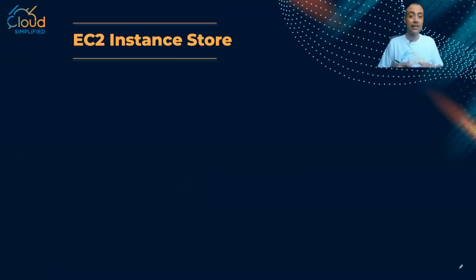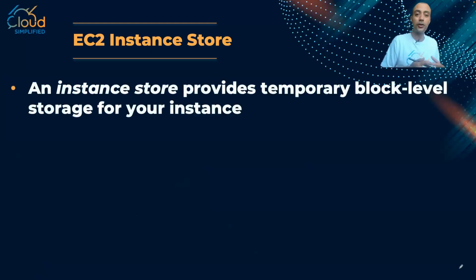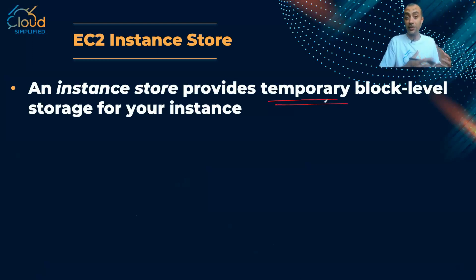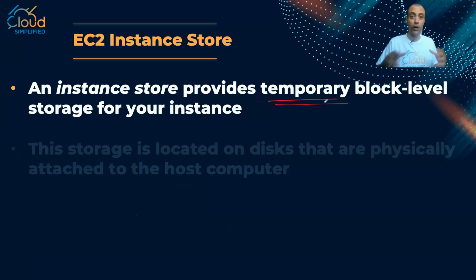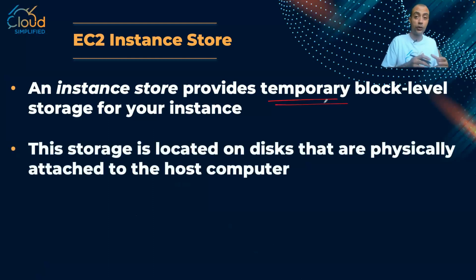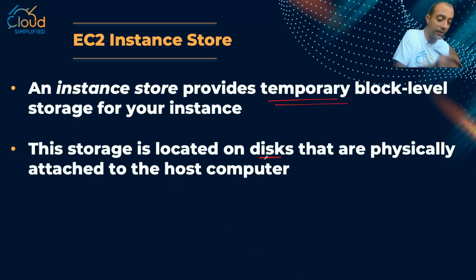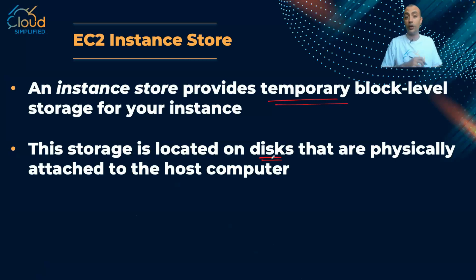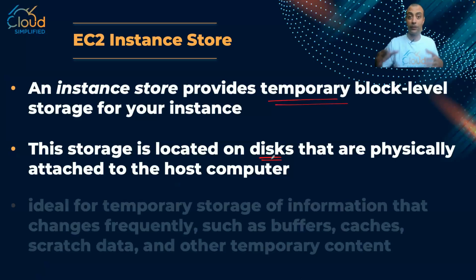Now let's look at the characteristics of the EC2 Instance Store. First, Instance Store provides temporary block-level storage for your instance. As mentioned, if you stop or terminate the instance, your data is lost. Instance Store is the fastest type of storage because it is located on disks that are physically attached to the host where the EC2 instance runs.